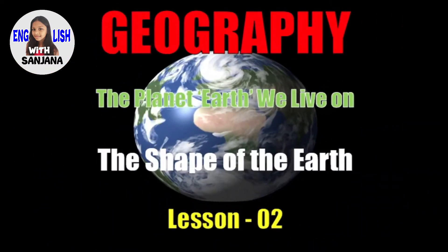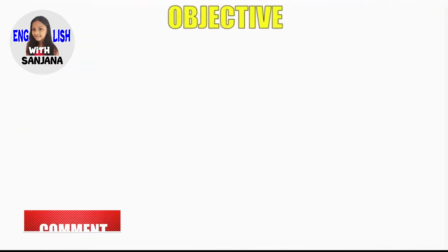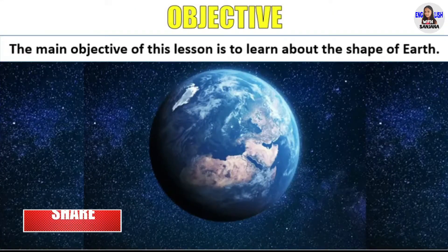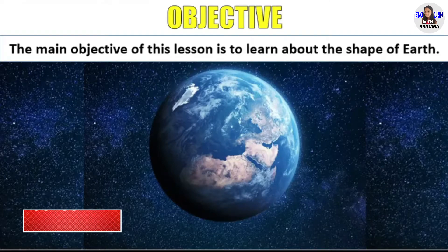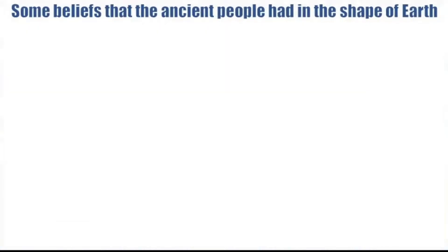Geography Unit 1: The Planet Earth We Live On — The Shape of the Earth, Lesson 2. Let's look at the objective of the lesson. The main objective of this lesson is to learn about the shape of Earth. Now I am going to tell you about some beliefs that the ancient people had in the shape of Earth.